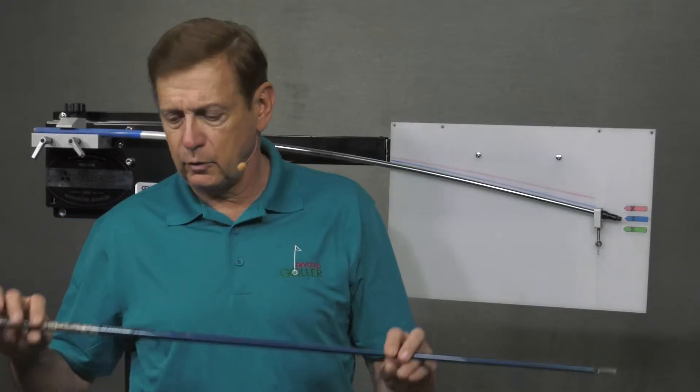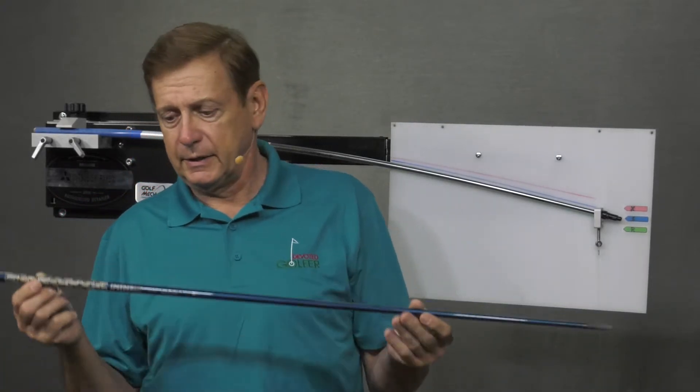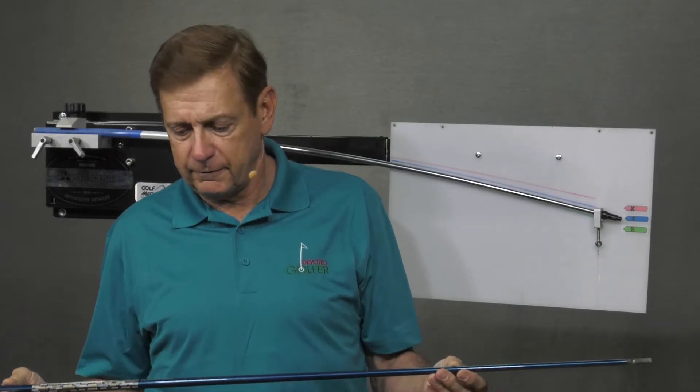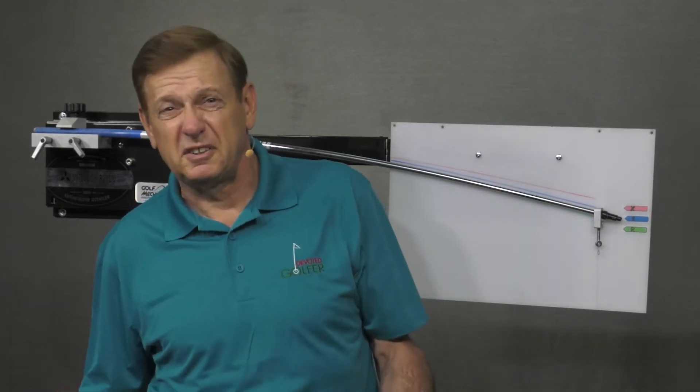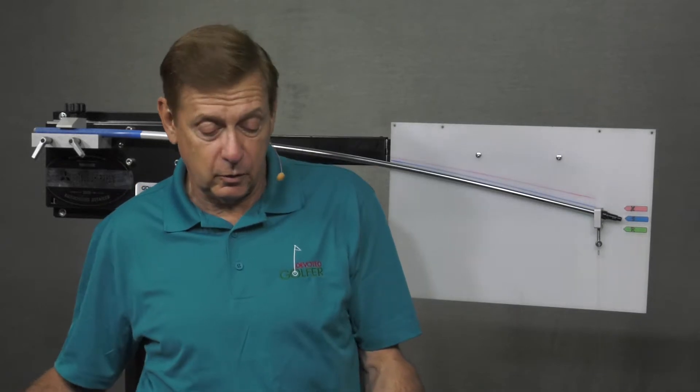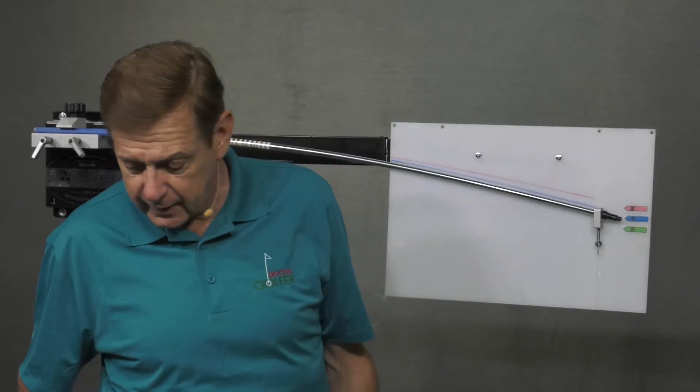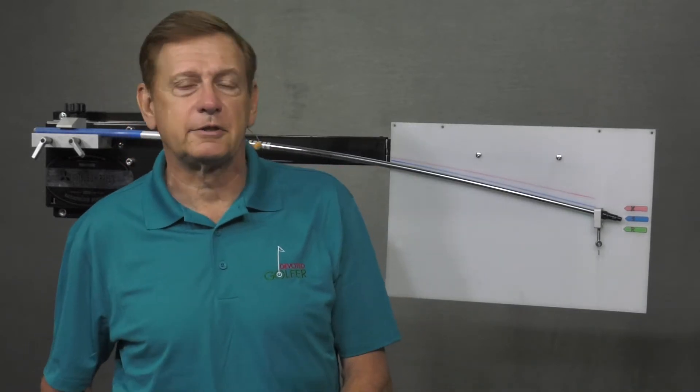Now let's look at an old shaft. I found this shaft in the shop. This is a Speeder 553 from maybe seven, eight years ago, maybe older than that. Let's put that on the board. It's an R-Flex and see where it falls.